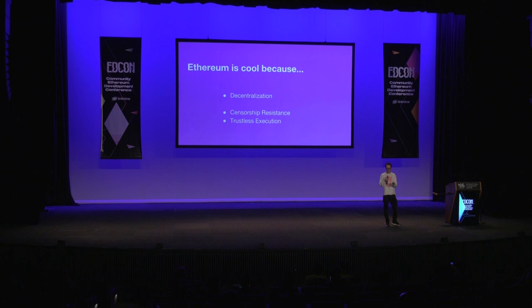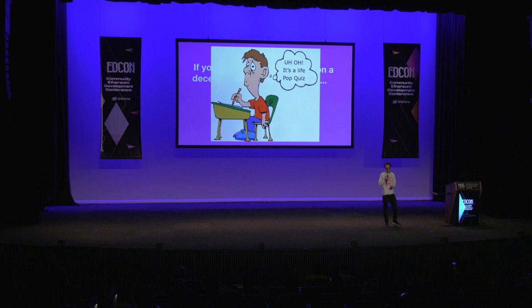Ethereum is cool because of decentralization, censorship resistance, and trustless execution. Uniswap is cool because of decentralization, censorship resistance, and trustless execution.